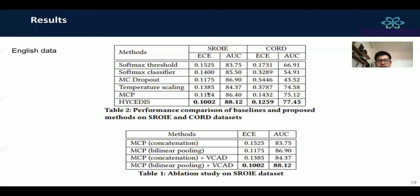To evaluate our model, we also did some ablation studies on SROIE dataset. As you can see, we try to apply the multi-modal conformal predictor with concatenation of features and bilinear pooling. The MCP with bilinear pooling always has results higher than concatenation in normal methods. When we combine MCP bilinear pooling with VAE, it continues to achieve higher scores in AUC and lower scores in ECE. From all the experiments that I have analyzed above, I can tell that our HYCEDIS model achieved state of the art compared with previous methods.